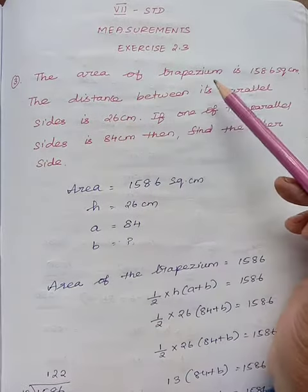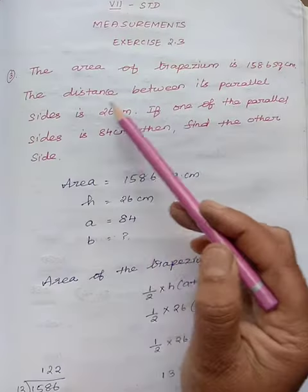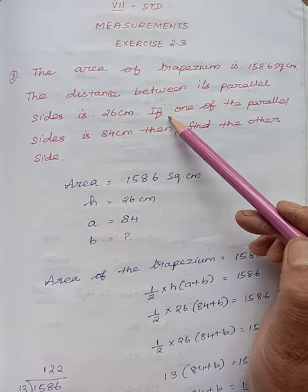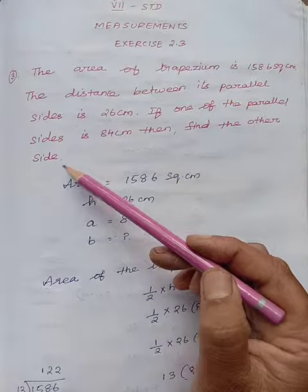The area of a trapezium is 1586 square centimeters. The distance between its parallel sides is 26 centimeters. Distance means height. If one of the parallel sides is 84 centimeters, then find the other side.